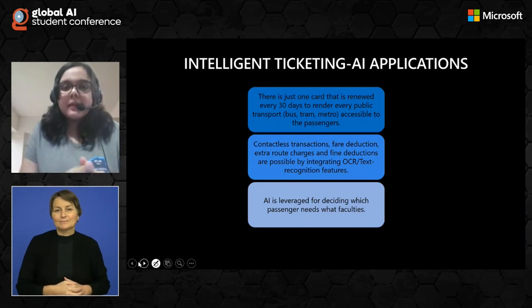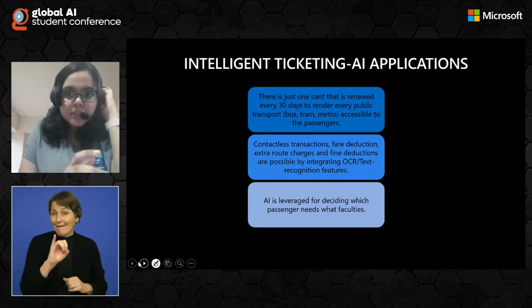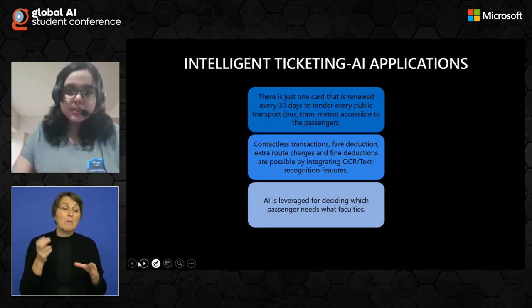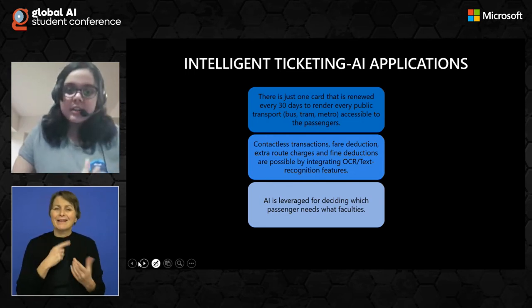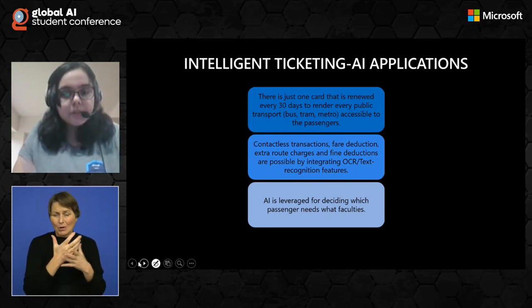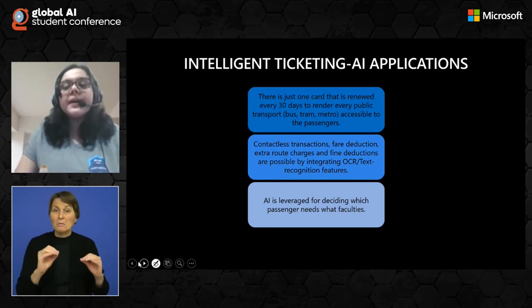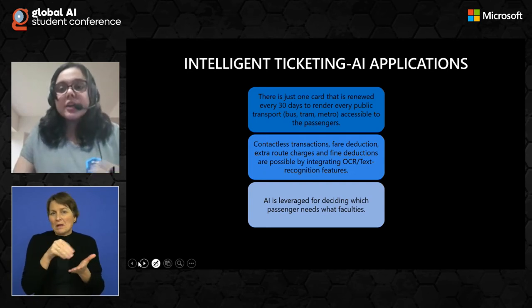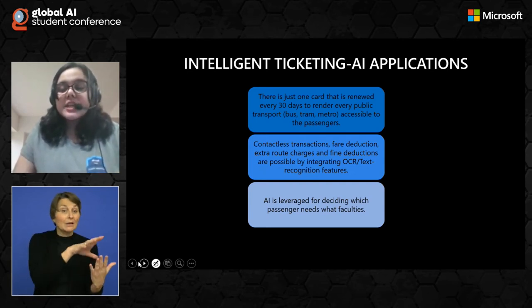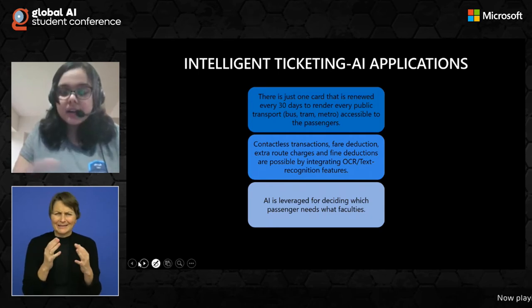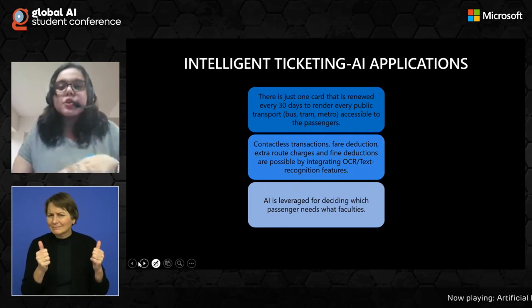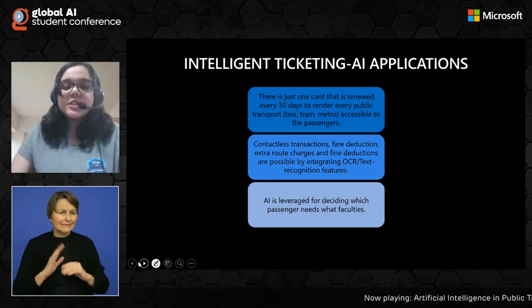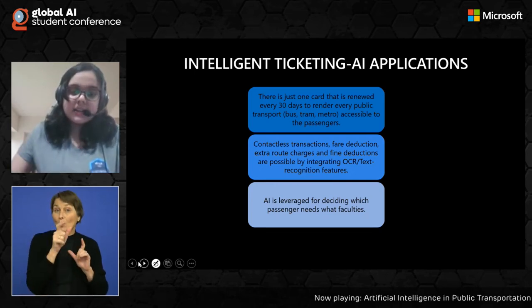For AI applications, just one smart card is reviewed every 30 days to render every public transportation — be it a bus, tram, or metro — accessible to the passengers. Contactless transactions are very useful during COVID-19. Fare deductions, extra road charges, and other deductions are possible only by integrating OCR and text recognition features in embedded systems so as to make it realize on what particular instances it should be deducting fares and on what instances it should be giving discounts. AI is leveraged for deciding which passenger needs what facilities at what particular point in time.